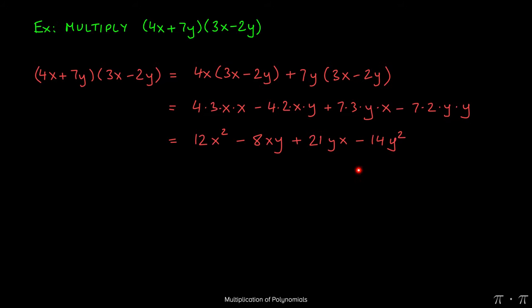Now you might think that we're done here, but we do actually have like terms. xy and yx are like terms because of the commutative property of multiplication. We can rearrange these two variables and still have the same exact problem. So here we have negative 8xy and here we have 21xy as well.